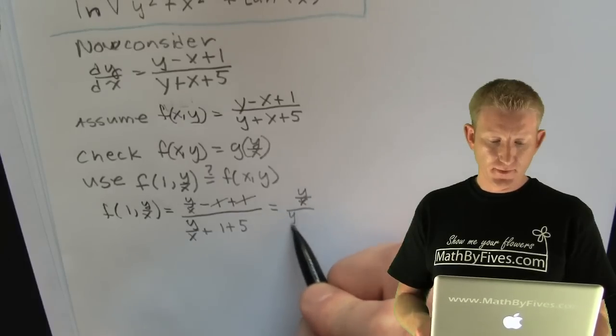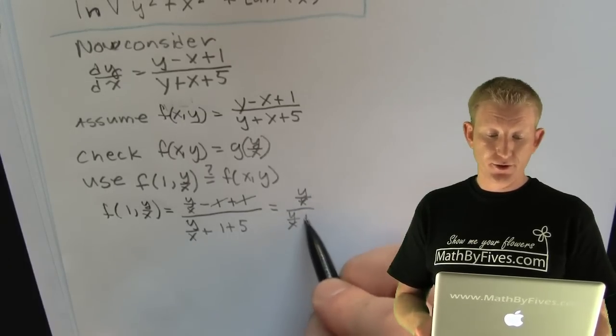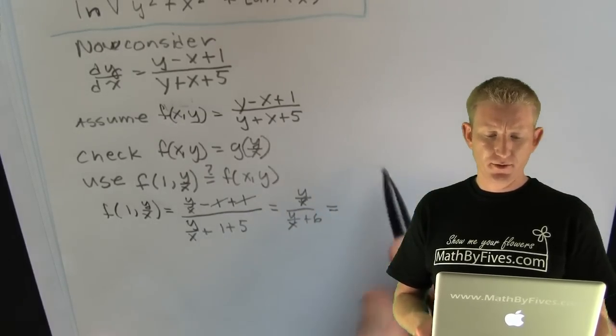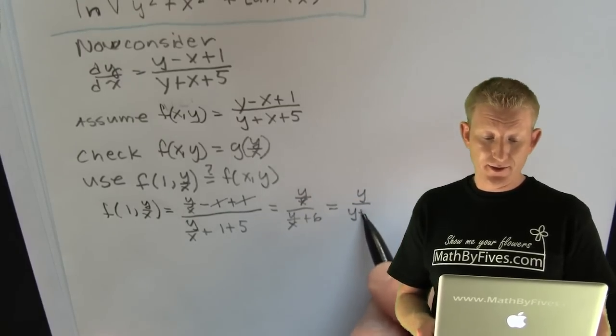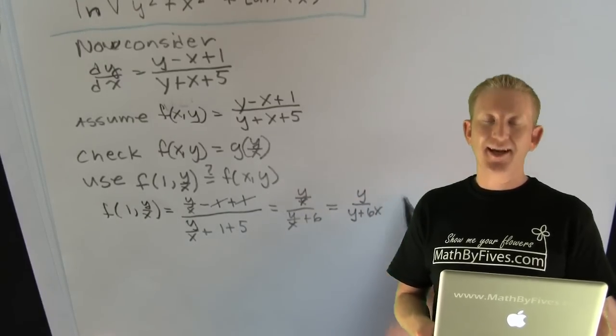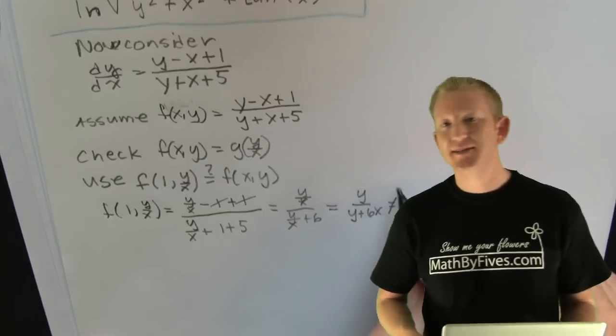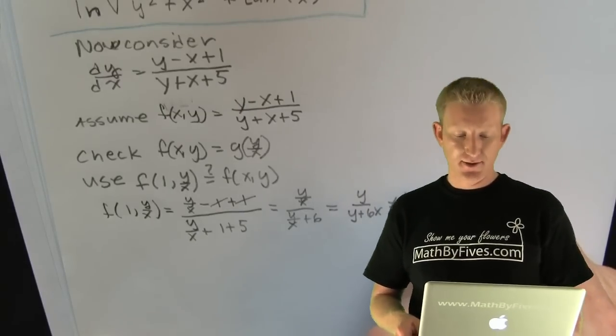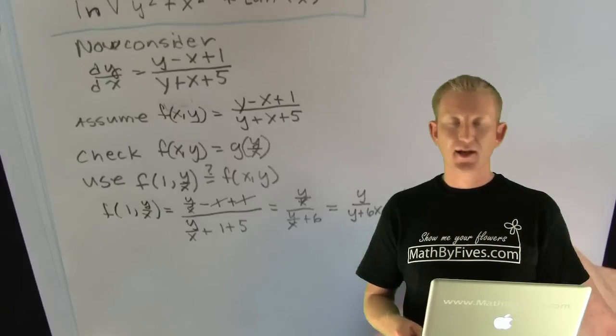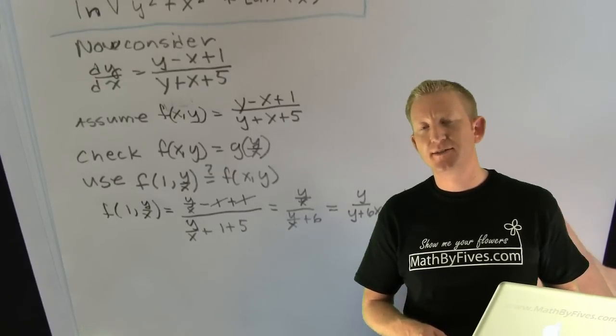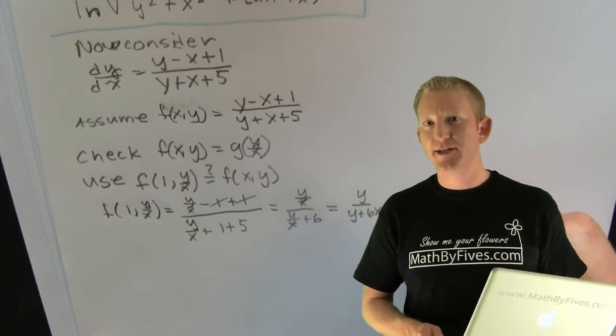Additive inverses, nice move. Looks like six. Multiplies top and bottom by x to get rid of those denominators. That's not the original function, so this isn't homogeneous. I wonder what he's going to do to make it homogeneous. He's probably going to perform a linear transformation.